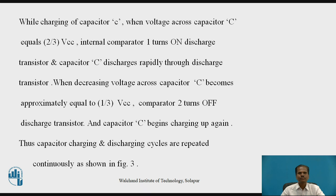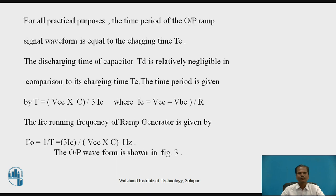The charging time Tc is approximately 0.693. For all practical purposes, the time period of the output ramp signal waveform equals the charging time Tc, since the discharging time Td is relatively negligible in comparison. The time period is given by T = VCC × C divided by 3 × Ic, where Ic = (VCC − Vbe) / R. The free-running frequency of the ramp generator is given by F₀ = 1/T = 3 × Ic / (VCC × C), measured in Hertz. The output waveform is shown in figure number 3.